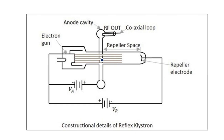This is the repeller space that the electron has to travel from this gap towards the repeller. As the repeller electrode is applied with a high negative potential, the three electrons will be repelled back at different positions because of their different velocities. The three different electrons — the reference electron, the early electron, and the late electron — originate at this gap and travel towards the repeller space.